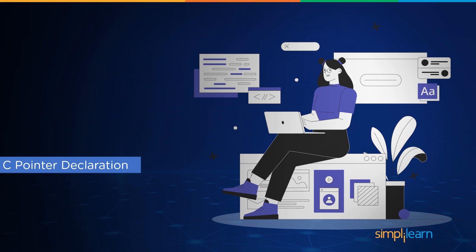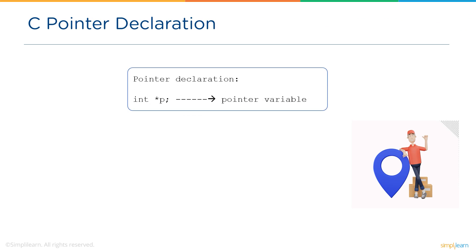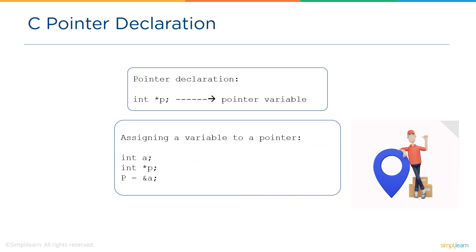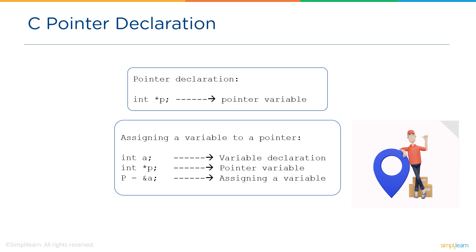Now let's look at pointer declaration. We have the data type followed by the asterisk symbol and the name of a pointer variable. To assign a variable to a pointer we use the ampersand symbol. For example, let's declare a variable of type int, then declare a pointer variable p, and then variable a is assigned to pointer variable p.